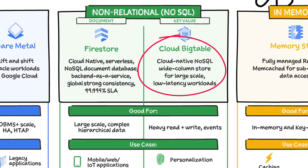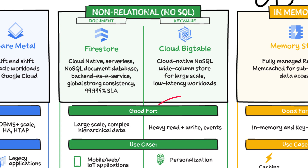Cloud Bigtable is a sparsely populated table that can scale to billions of rows and thousands of columns, enabling you to store terabytes or even petabytes of data. It is ideal for storing very large amounts of single-key data with very low latency, and it supports high reads and write throughput at sub-millisecond latency. It is an ideal data source for MapReduce-type operations. It also supports the open source HBase API standard to easily integrate with the Apache ecosystem, which includes HBase, Beam, Hadoop, and Spark, along with other Google Cloud ecosystem tools.